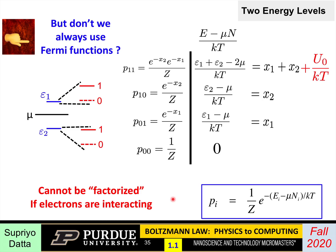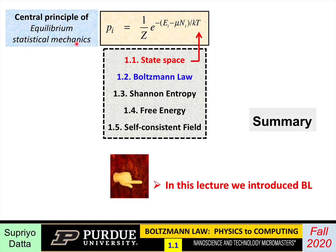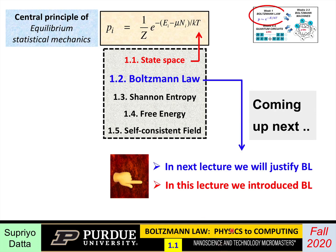You might say: in my solid-state physics or devices courses we always used Fermi functions even though electrons are interacting — how did we get away with it? The answer is the mean-field picture, which we'll come back to in the last lecture of this week. The main point is that Boltzmann's law is the general law that applies to any system — this is the central principle of equilibrium statistical mechanics. In the next lecture I'll explain where it comes from.